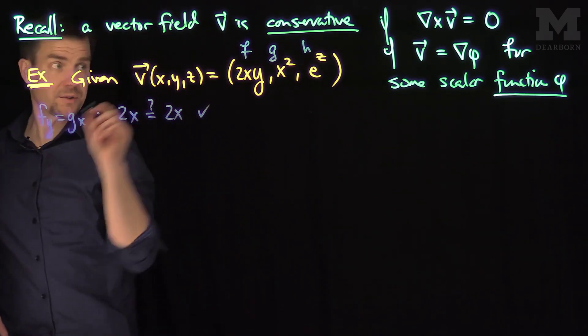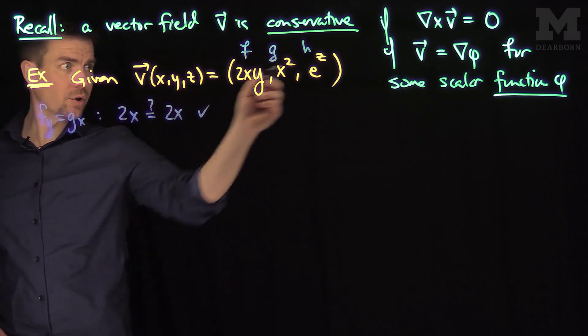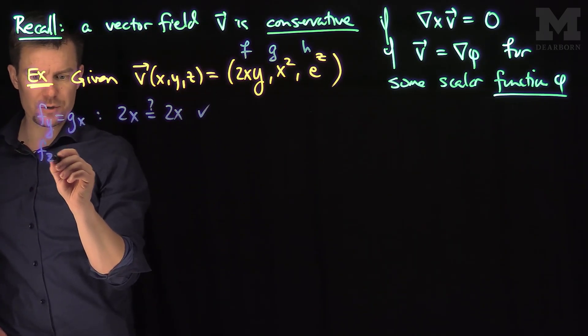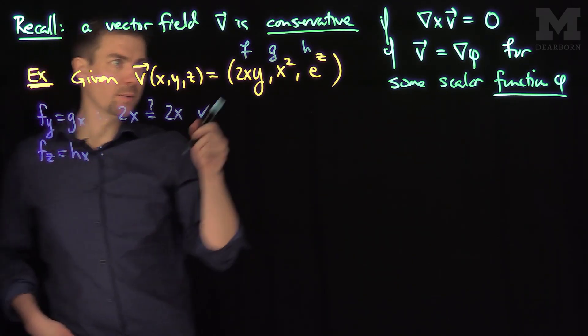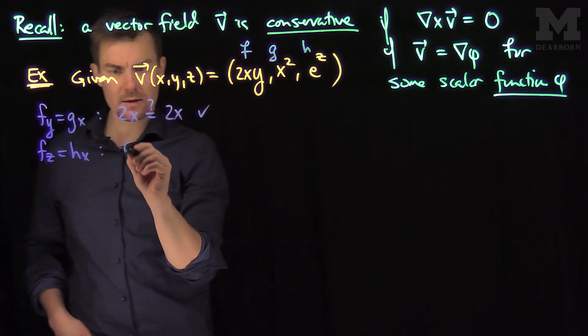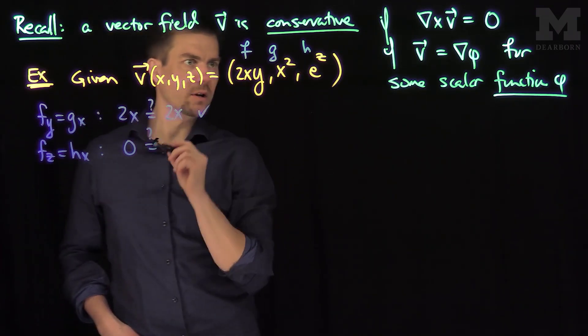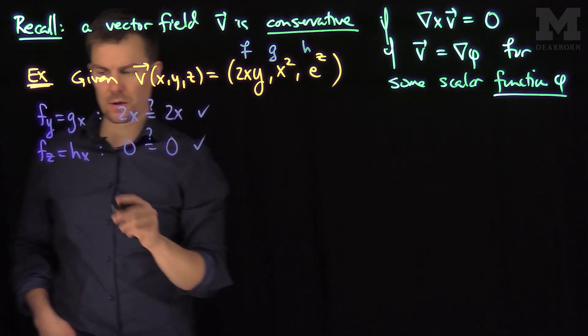We need partial F partial Z to be partial H partial X. Well, let's see what it is. The partial F with respect to Z is nothing. Is that equal to the partial of H with respect to X, which is also nothing? So that works. Good.